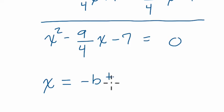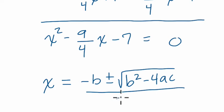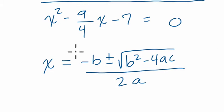It will always equal negative b plus or minus square root of b squared minus 4ac divided by 2a. And what that's saying is that if you have a quadratic equation written in standard form, which this is, you can plug in a, b, and c and solve for x. So where do we find a, b, and c?